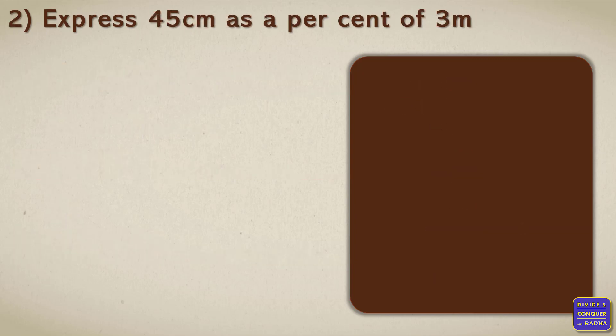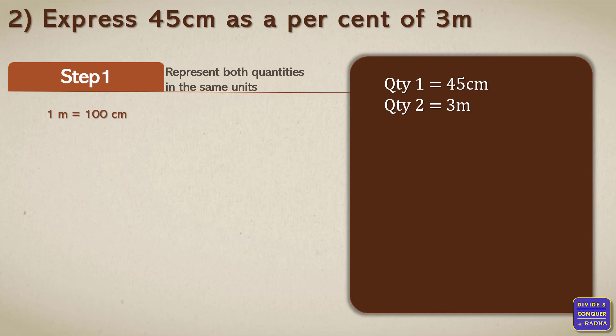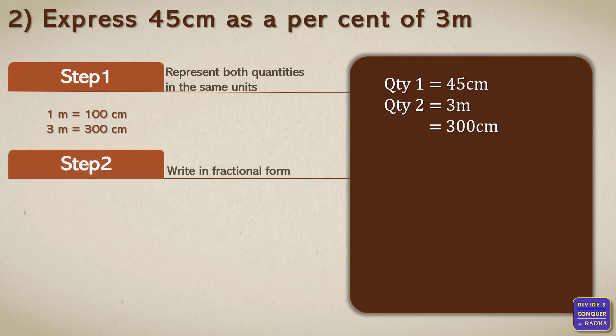Express 45 centimeters as a percent of 3 meters. Step one, we need to represent both in the same units. The first quantity is 45 centimeters and the second quantity is 3 meters. Let's convert the second quantity to centimeters. As per metric conversion, 1 meter is equal to 100 centimeters, therefore 3 meters equals 300 centimeters.